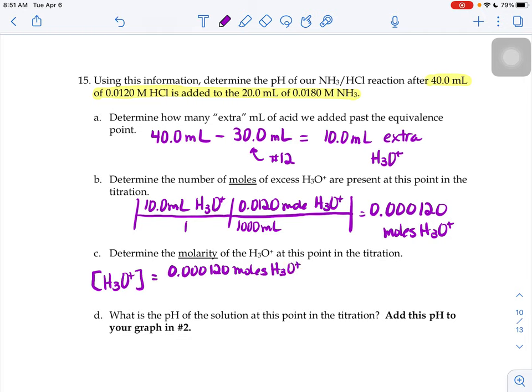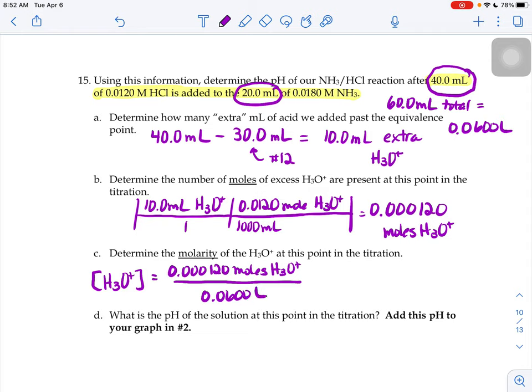Well our volume at this point in the titration, we've added 40 milliliters of acid to 20 milliliters of base. Right now at this point we have 60 milliliters of solution total, or if we change those 60 milliliters into liters, 0.06 liters, so that means the molarity of our extra H3O plus is 0.002.